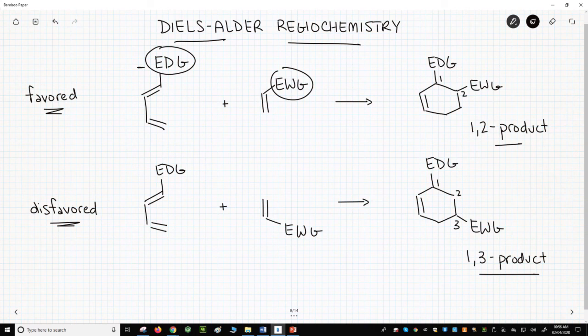With resonance, charges tend to flip on adjacent carbons. So let's start with our EDG and its negative charge and alternate charges through the diene. Let's do the same on the dienophile. We have an EWG, electron-poor, so a positive charge. Alternate charges away.